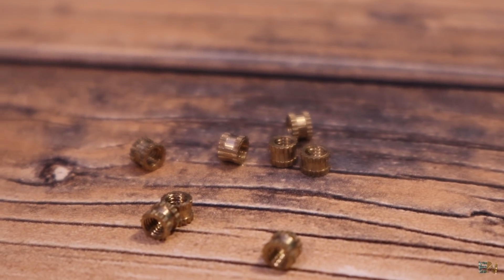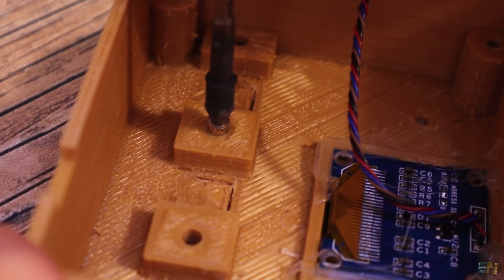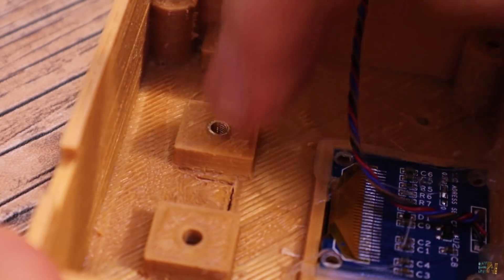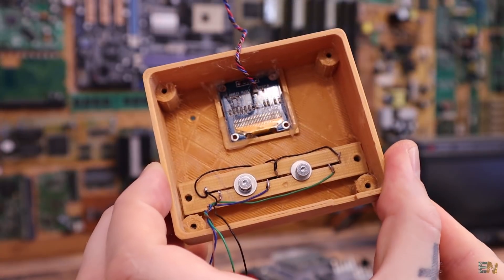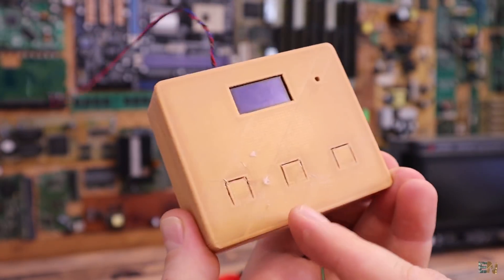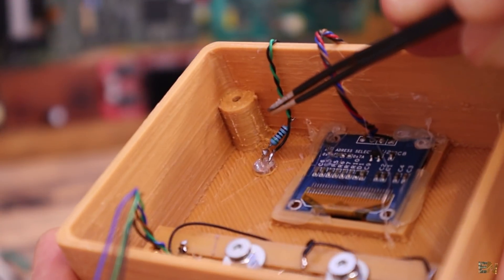Now I'll use these thread insertions. I use my soldering iron and fix them in place. I add the buttons part and using some M3 screws, I fix that part in place.